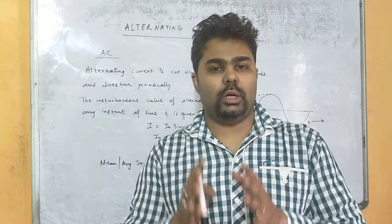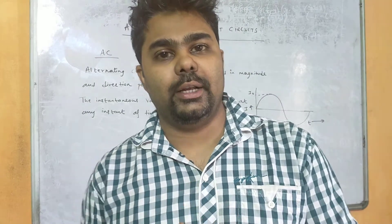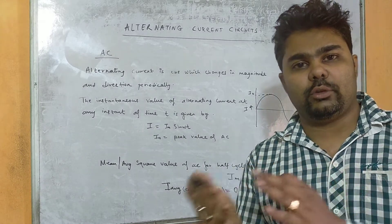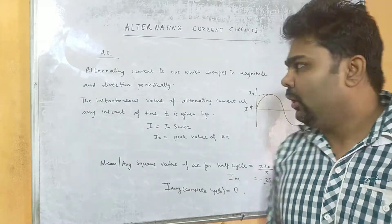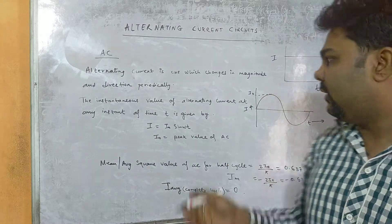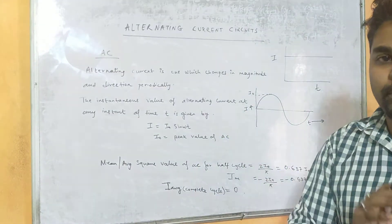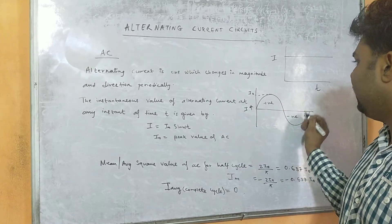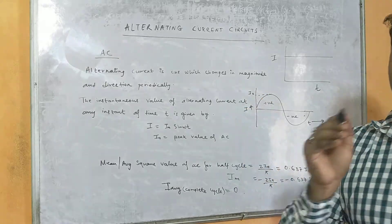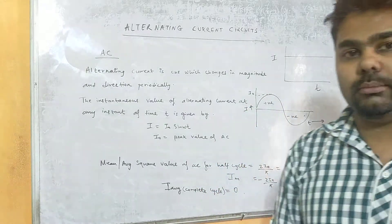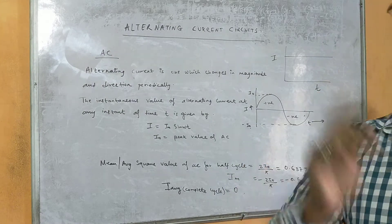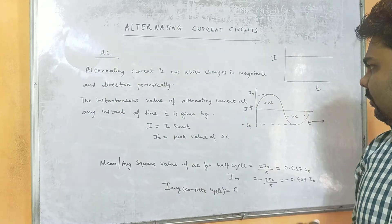So what is alternating current? Alternating current is that current which changes its magnitude and direction periodically. I have drawn here an alternating current which is varying with respect to time. Alternating current is a function of time, whereas direct current is independent of time. The magnitude of direct current is a straight line — on the passage of time the magnitude remains the same. Alternating current has a positive half cycle as well as a negative half cycle. I₀ is the maximum magnitude of alternating current in the positive direction and minus I₀ is the negative maximum.